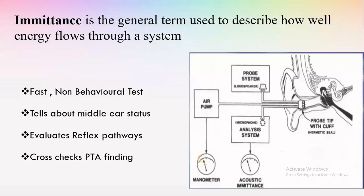Immittance is the general term used to describe how well energy flows through a system. It hardly takes more than five minutes to perform immittance testing. It can be used in children — it is a non-behavioral test, usable even in very small babies. It tells about different middle ear statuses, evaluates reflex pathways, and can give information from the cochlea, cochlear nucleus, auditory nerve, superior olivary complex, facial nerve, and back to the stapedius muscles.